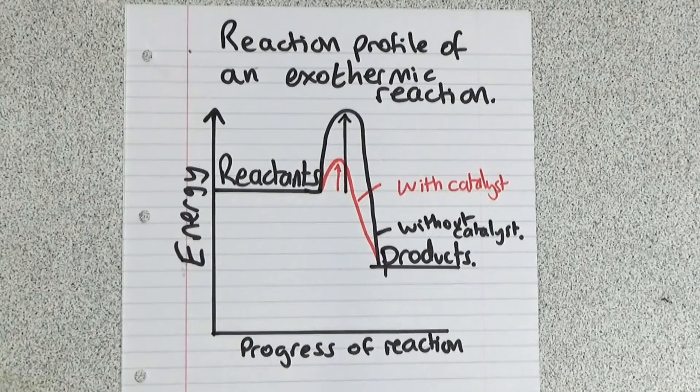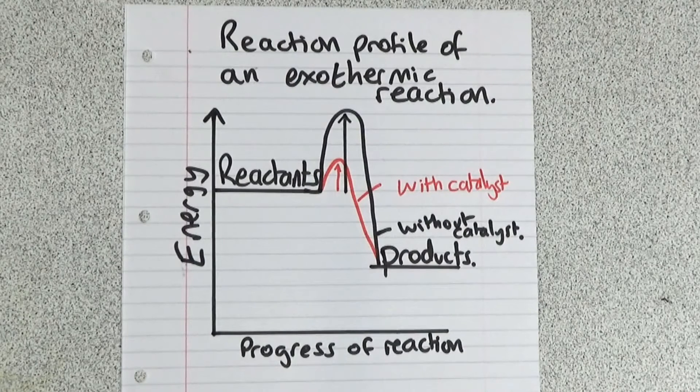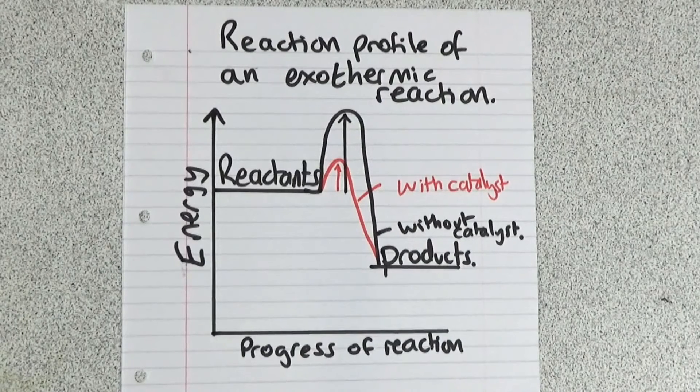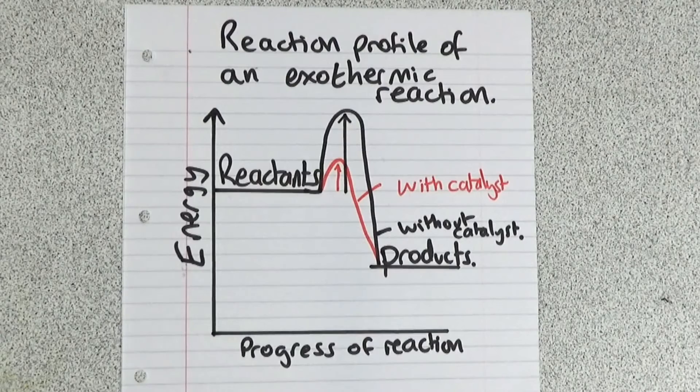Catalysts work by providing a different pathway for the chemical reaction, so this lowers the activation energy. So that means that even the slower moving particles with less energy now have got enough energy to cause a reaction, so there's going to be more successful collisions. So that means there will be a higher rate of reaction.